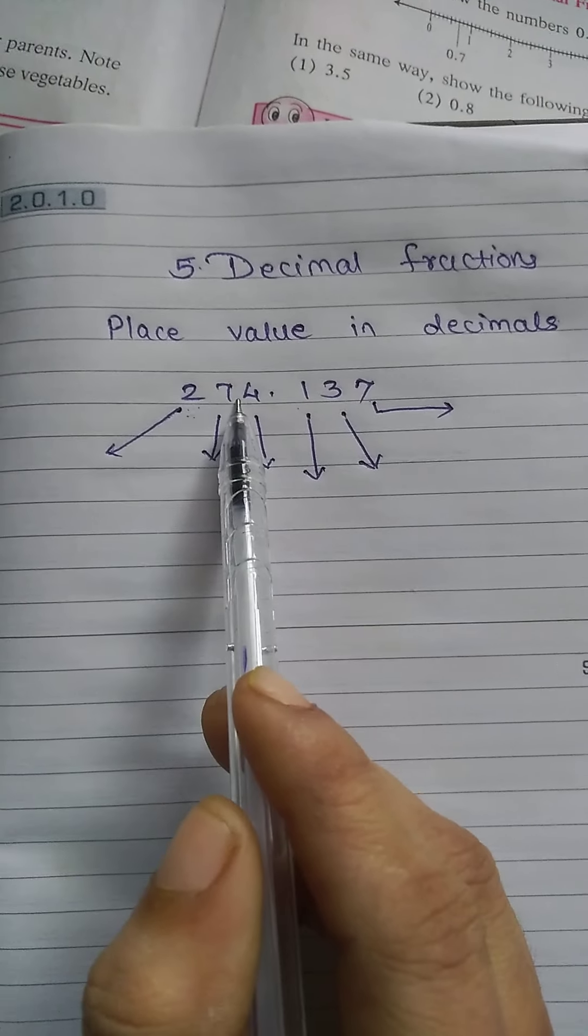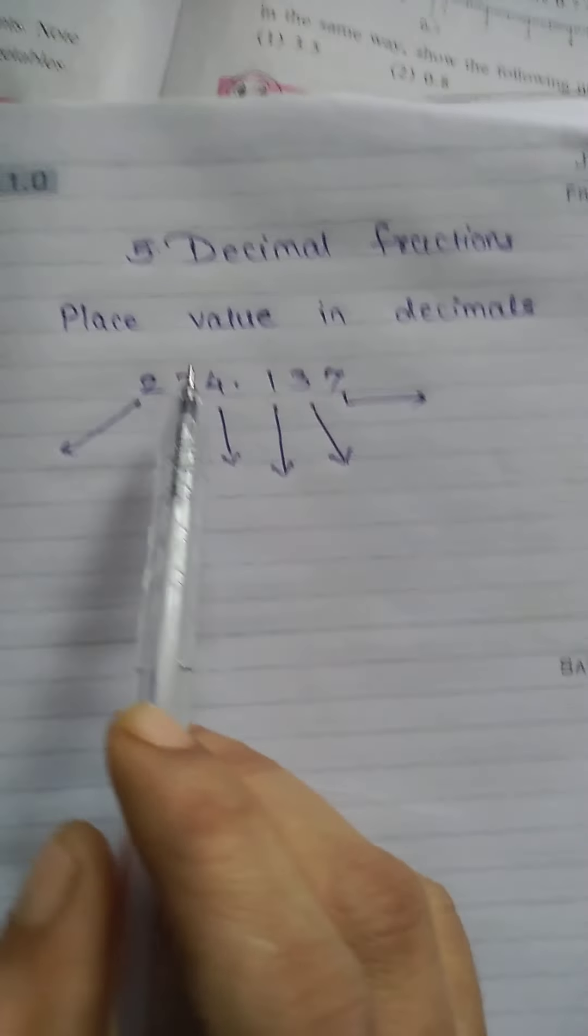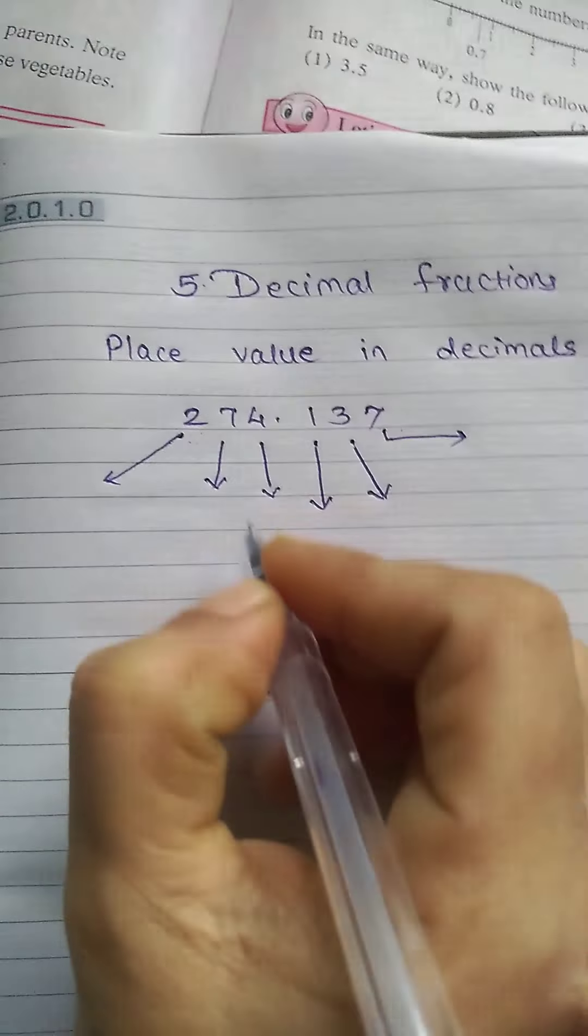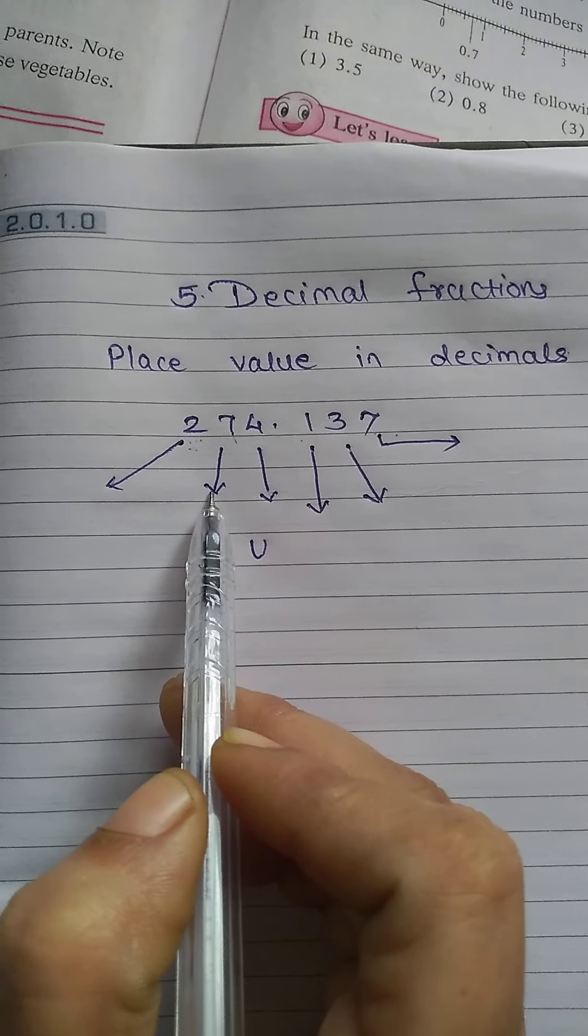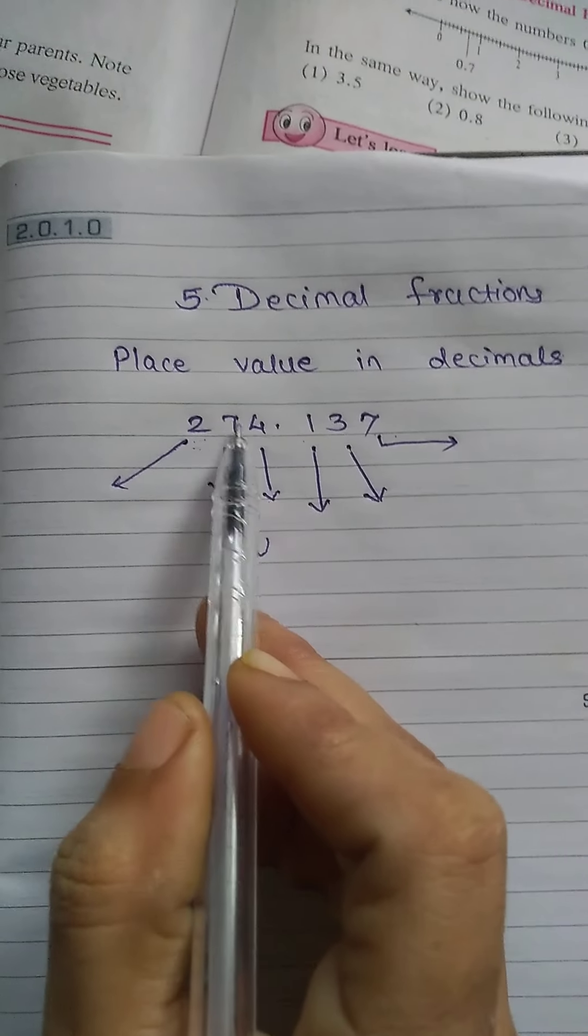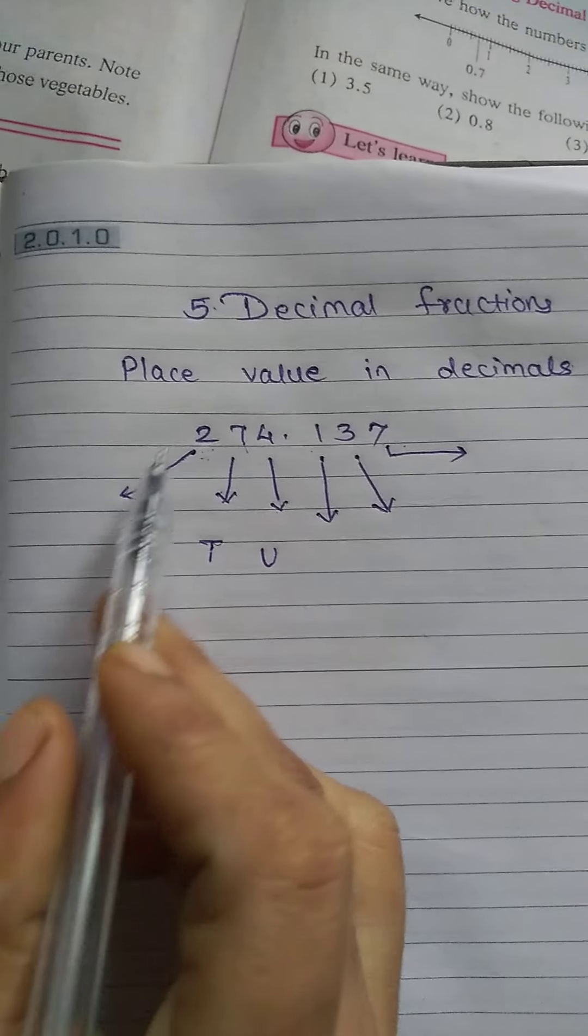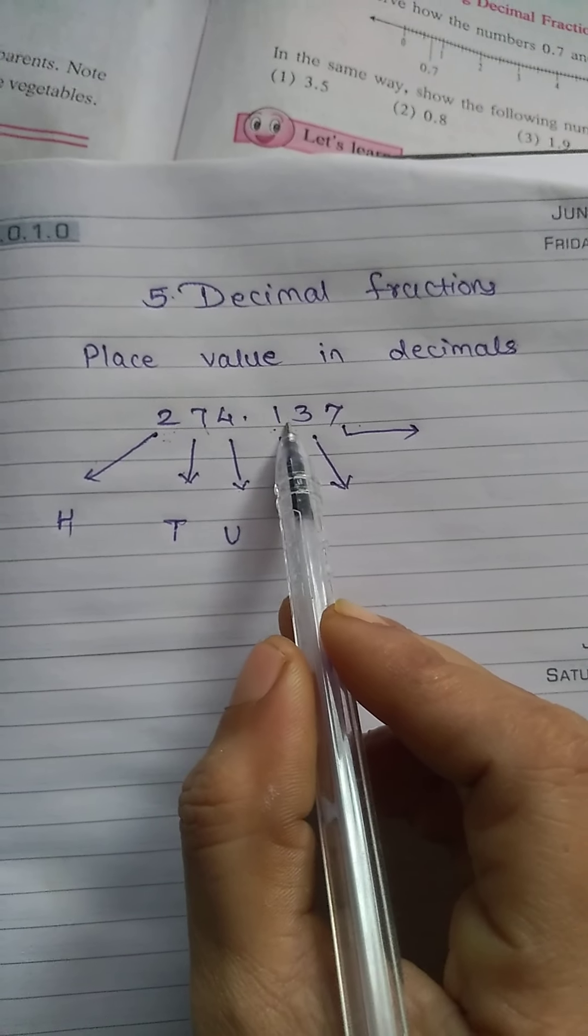Now what is the place value of the 4 over here? The place value of 4 is units. The place of 7 is tens and the place of 2 is hundreds. Now what will be the place value of this number? The place of this number - this will not be the unit place.